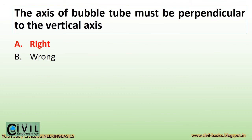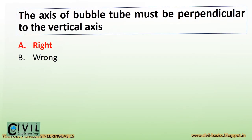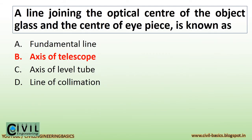The axis of the bubble tube must be perpendicular to the vertical axis. A line joining the optical center of the object glass and the center of the eyepiece is known as the axis of telescope.